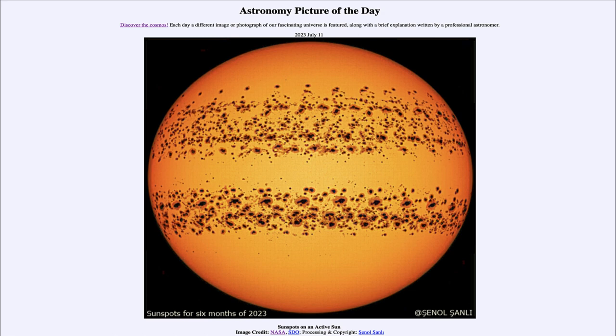So here we get to see a very active sun showing the sunspots for the first six months of this year with lots more sunspots expected over the next couple of years. So that was our picture of the day for July 11th of 2023. It was titled sunspots on an active sun.